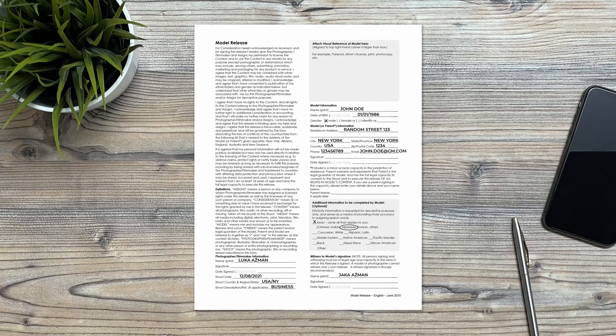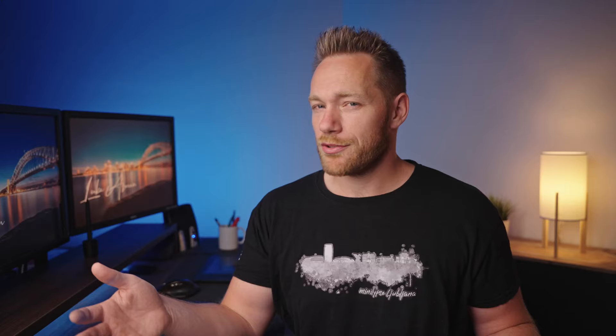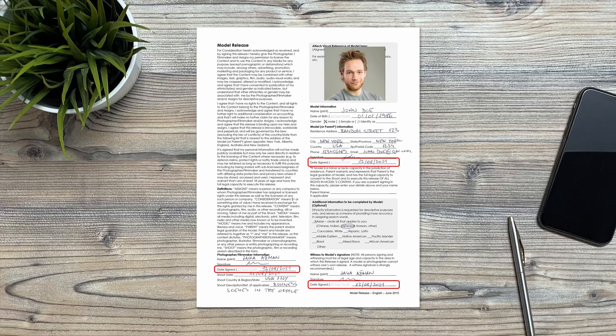A few more important notes. All signatures and dates on the release must be in ink — it has to be signed with a pen. If you want, you can fill in all other info digitally in Photoshop, for example, but then you have to print the release and add dates and signatures with a pen, otherwise your releases will be rejected. Regarding dates: all three participants — photographer, model or parent, and witness — must sign the release on the same date. But the shoot date can be different from the signature date, because it happens that you forget about the releases on the shoot and the model signs them a few days or even months after the shoot, and that's totally fine.